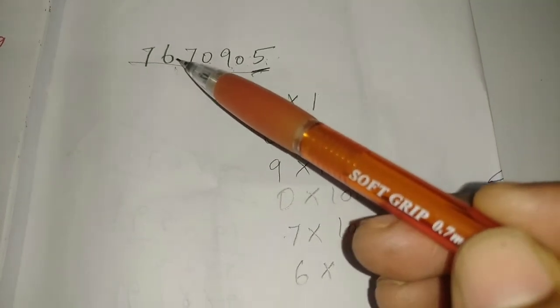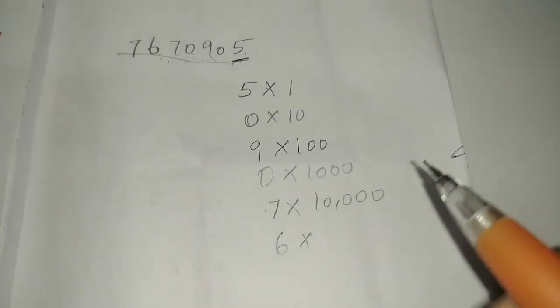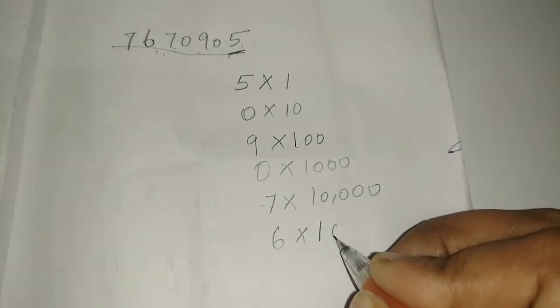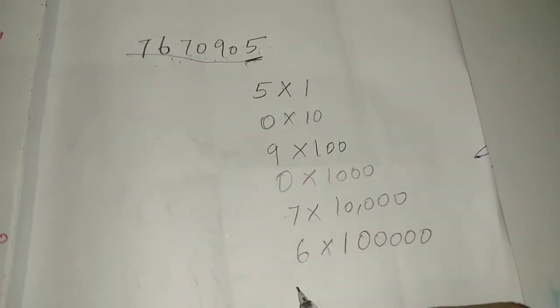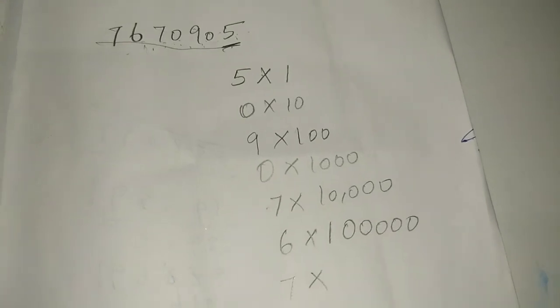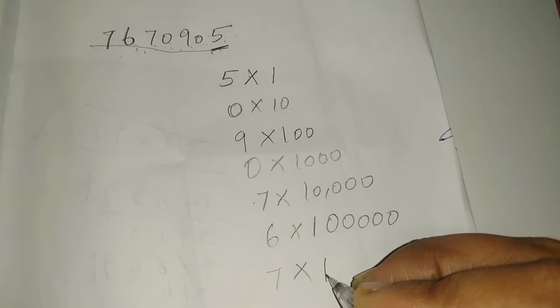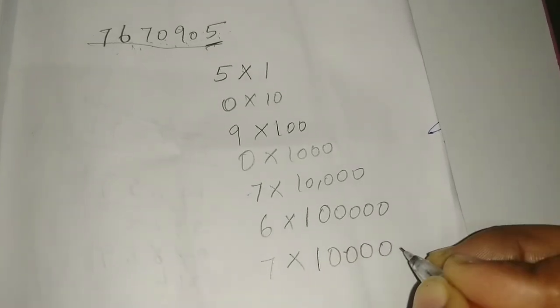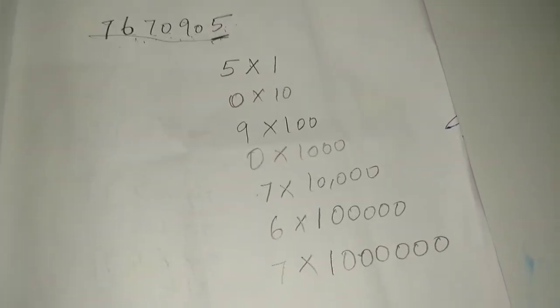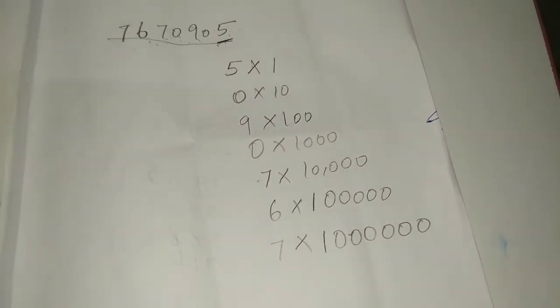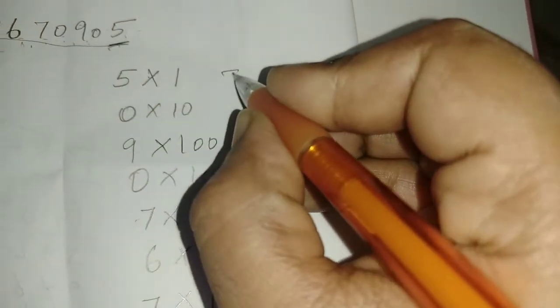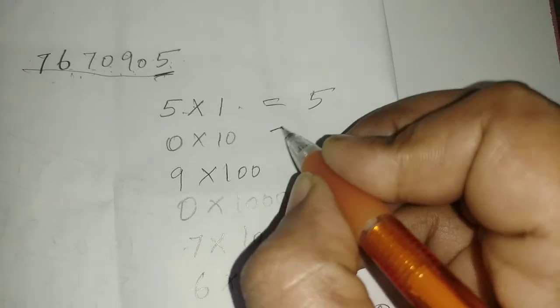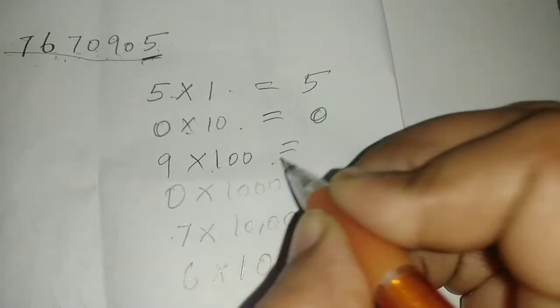Starting from the right: 5 is in the ones place, so 5 into 1 equals 5. 0 is in the tens place, so 0 into 10 equals 0. 9 is in the hundreds place, so 9 into 100 equals 900. 0 is in the thousands place, so 0 into 1,000 equals 0. Then 0 into 10,000 equals 0. Then 7 is in the lakhs place: 7 into 1,00,000. And 6 is in the 10 lakhs place: 6 into 10,00,000.